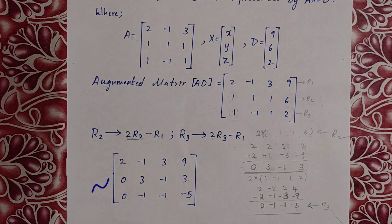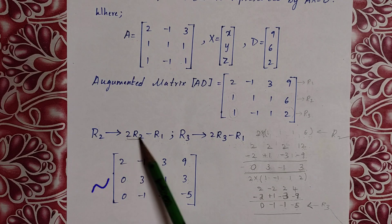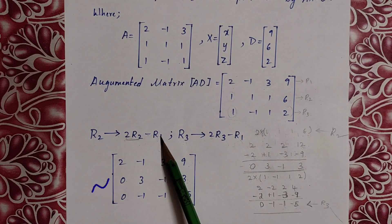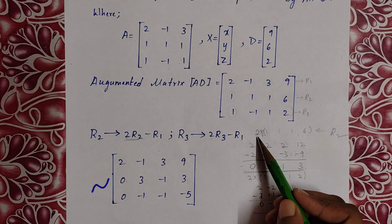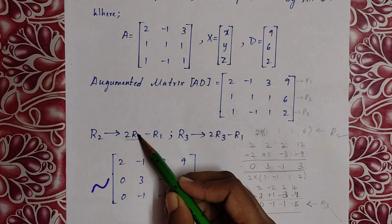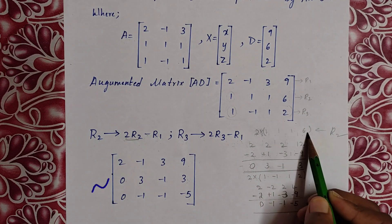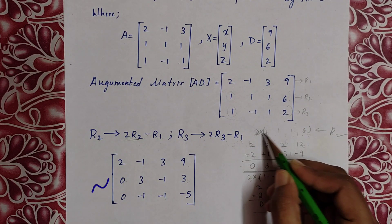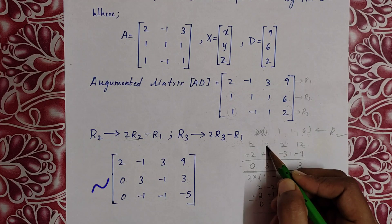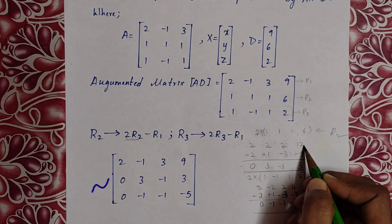We perform row operations to get the identity matrix. R2 turns to 2R2 minus R1. Computing 2 into R2: row R2 is [1, 1, 1 | 6], so 2×R2 gives [2, 2, 2 | 12]. R1 values stay the same since we are performing on R2.